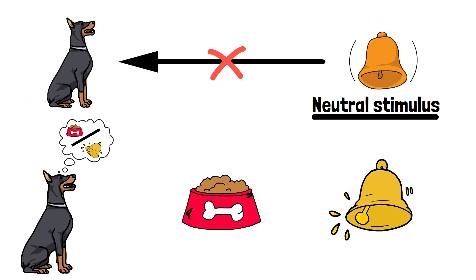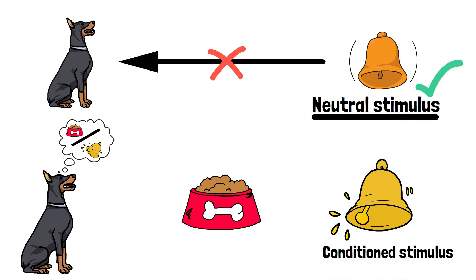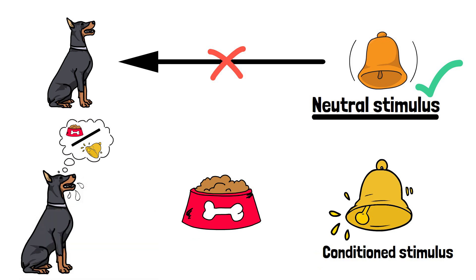Over time, the bell, which was originally a neutral stimulus, became a conditioned stimulus. The dogs started to salivate in response to the bell alone, even when no food was presented.